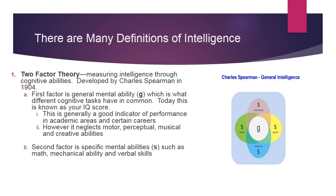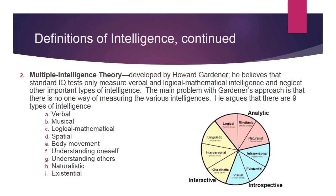Moving on, we have the multiple intelligence theory, which personally is my favorite. This was developed by Howard Gardner, and he believes that standard IQ tests only measure verbal and logical-mathematical intelligence and neglect other important types of intelligence. The main problem with Gardner's approach is that there is no way of measuring these various intelligences.